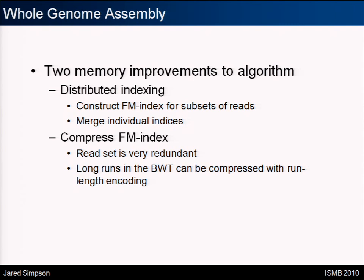The second improvement actually improves compression. The Burrows-Wheeler transform was designed for text compression in the 90s. The permutation ends up grouping characters into runs in the string — you end up with long runs, say 2180s, especially for redundant reads. We have 20x or 30x coverage, so there's huge redundancy. We're just compressing the BWT string using run-length encoding, which reduces the memory requirement significantly.